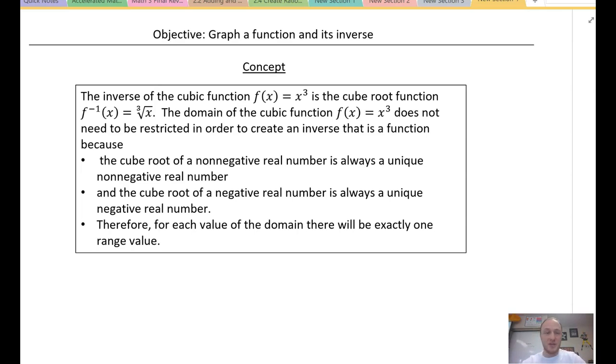Now, here is why. The cube root of a non-negative real number is always a unique, which means there's only one, non-negative real number. The cube root of a negative real number is always a unique negative real number. So, if I plug in a negative number, I get a specific negative number out. If I plug in a positive number, I get a specific positive number out. Therefore, each value of the domain will be exactly one range value. Pretty much saying you don't need to restrict the domain, all real values.